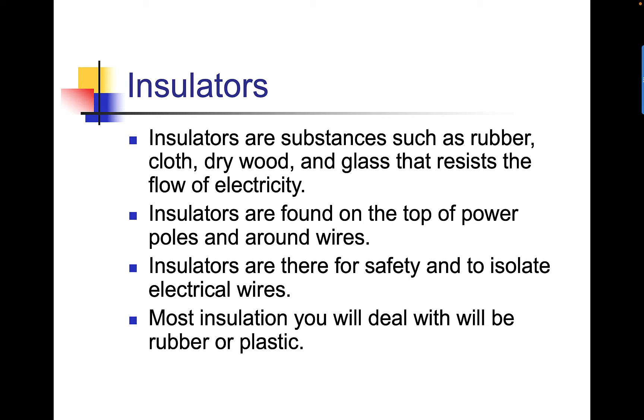Insulators are substances such as rubber, cloth, dry wood, and glass that resists the flow of electricity. Insulators are found on top of power poles and around the wires. Insulators are there for safety and to isolate electrical wires. Most insulation you deal with will be rubber or plastic.